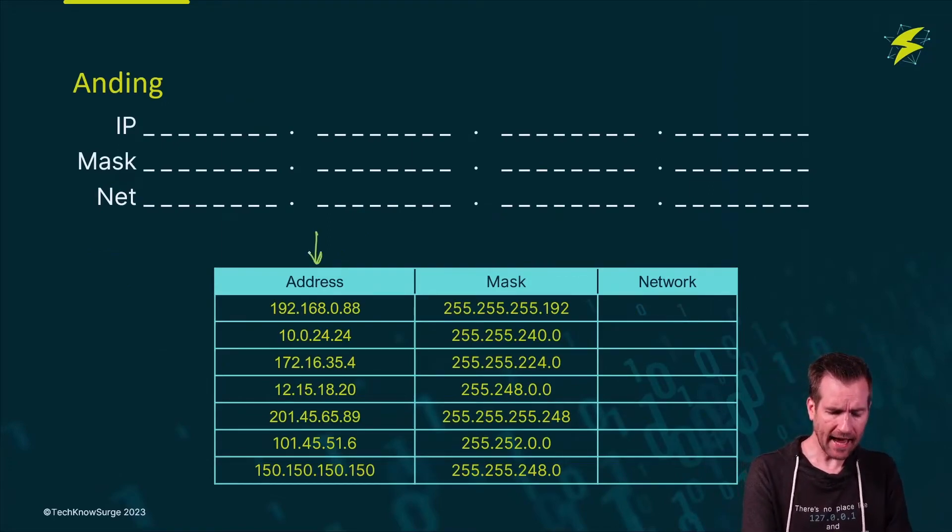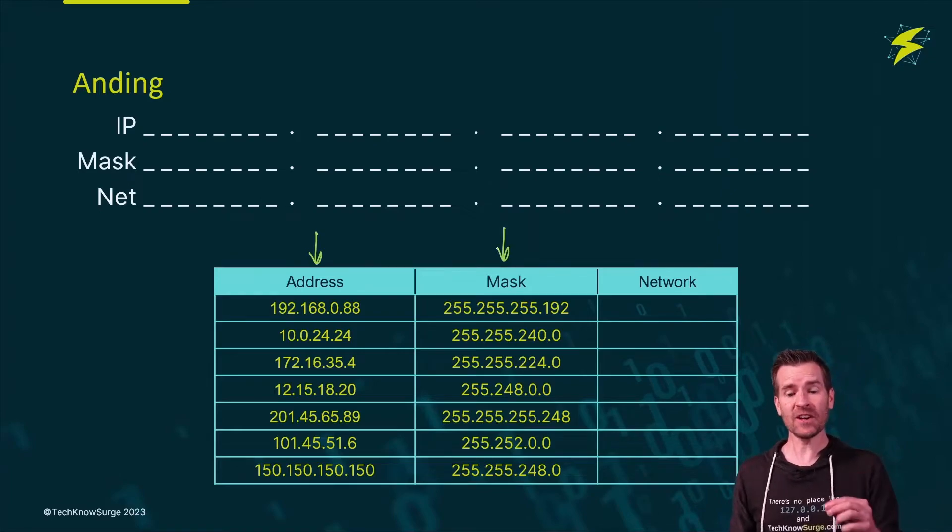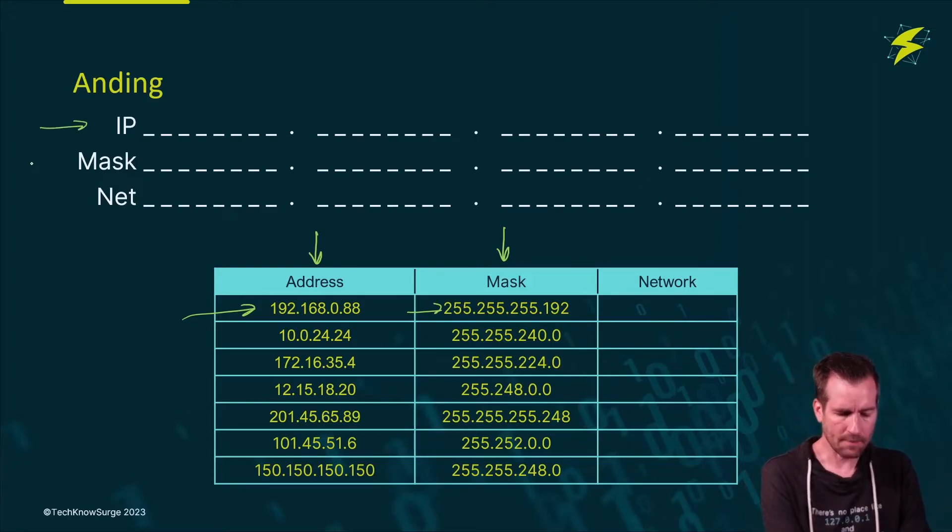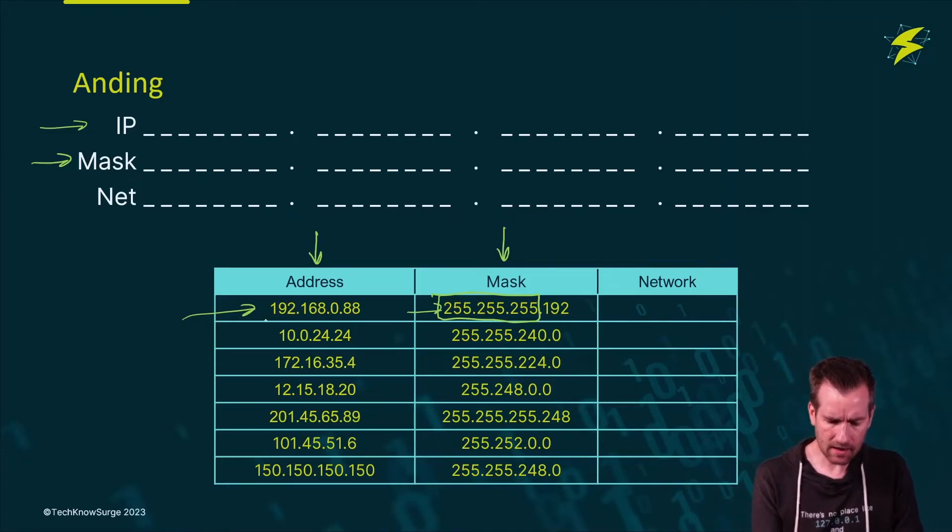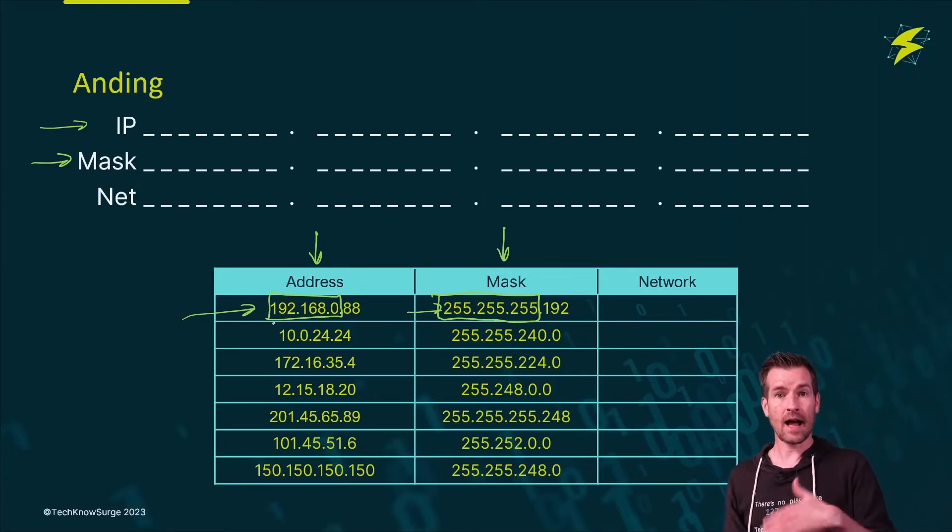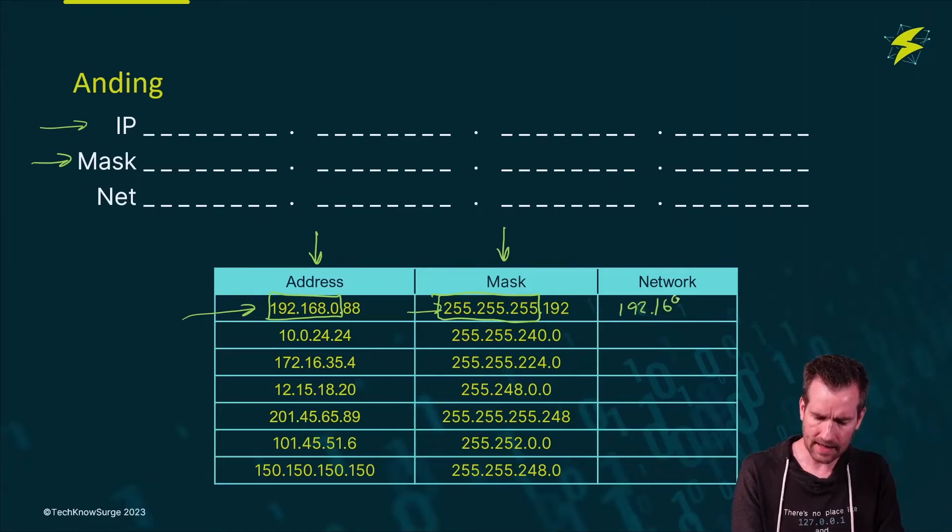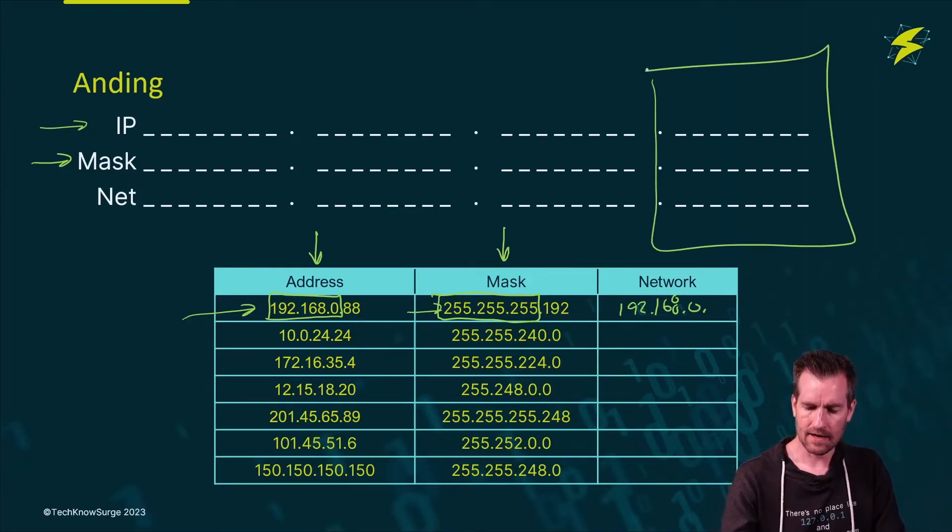Let's put this into practice. Here are several addresses that I have and the masks for those addresses. Let's figure out what the network address is for each one of those. I can take this 192.168.0.88 with the mask of 255.255.255.192. But I don't necessarily need to convert all of this to binary because I already know that the first three octets are going to be part of the network address.